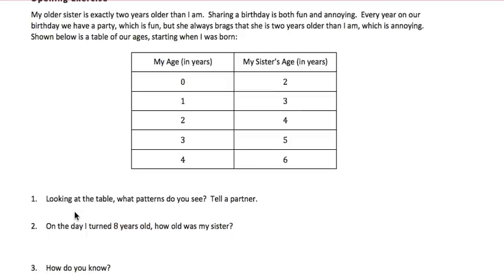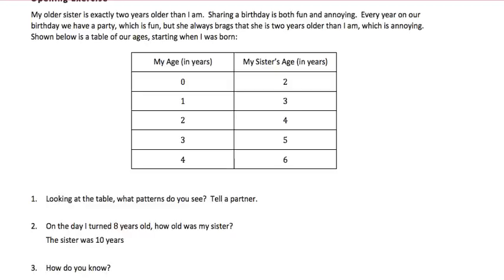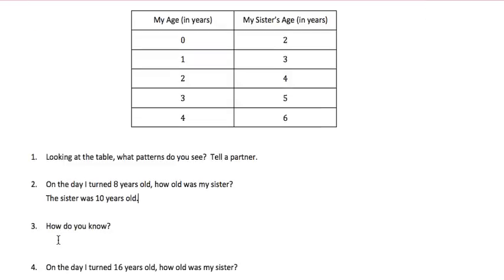Looking at the table, what patterns do you see? After you talk to a partner, you'll probably notice that each row increases by one, and that if you add two to the left side you'll get the answer on the right side. On the day I turned eight years old, how old was my sister? If we recognize the pattern, we would know that the sister was 10, because you add two to my age to get my sister's age.